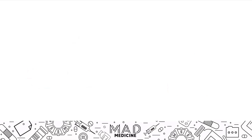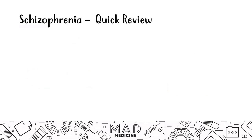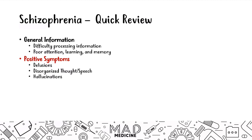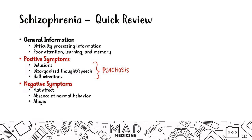Before we talk about those three disorders, let's first discuss schizophrenia and have a quick refresher. Schizophrenia is a mental disorder where patients have difficulty processing information as well as poor attention, learning abilities, and memory. It's identified by a hallmark of having two main types of symptoms. The first are the positive symptoms — delusions, hallucinations, and disorganized thought and speech — collectively called psychosis. Then you also have the negative symptoms, which include having a flat affect, absence of normal behavior, alogia or speech poverty, an unsocial personality, and a lack of motivation.